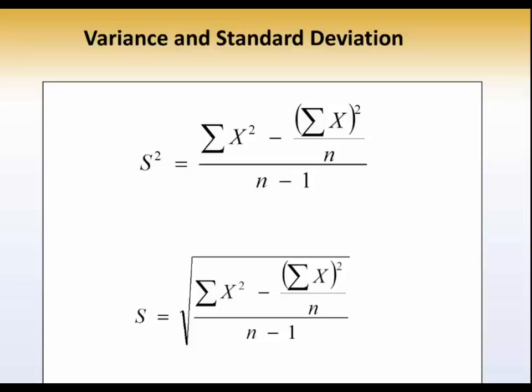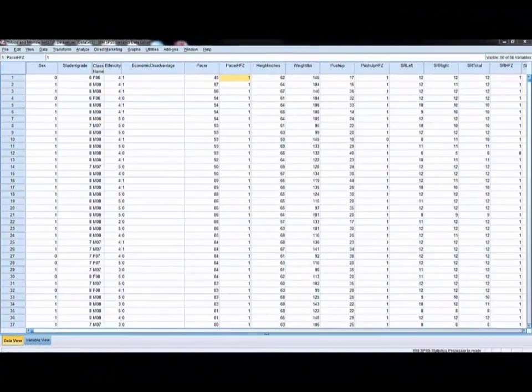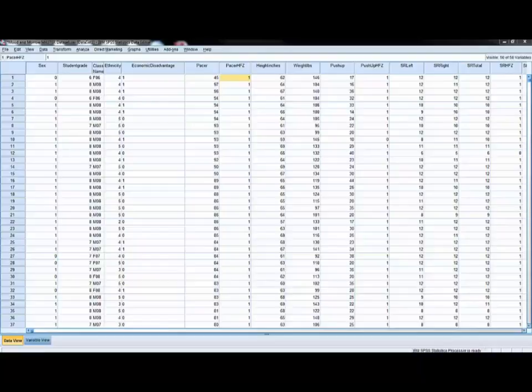Let's now turn to SPSS and illustrate different variances. Here's our data set again. This time what we're going to do is take a look at Pacer laps. We want to see if Pacer laps are more variable or less variable depending upon the grade level in which you are enrolled.